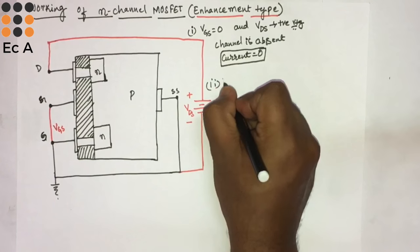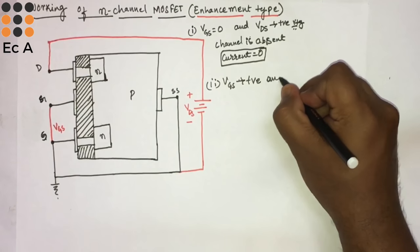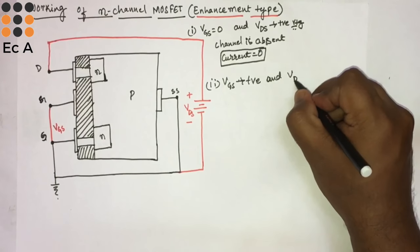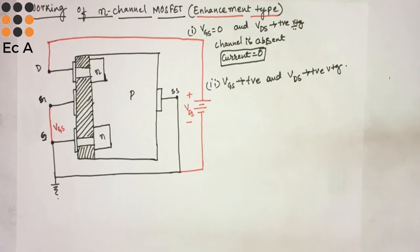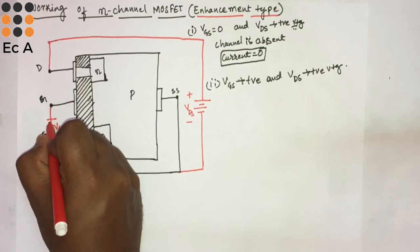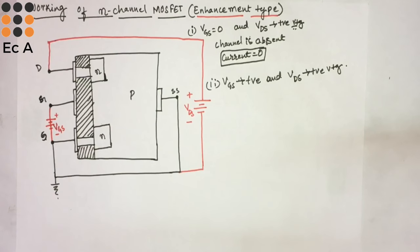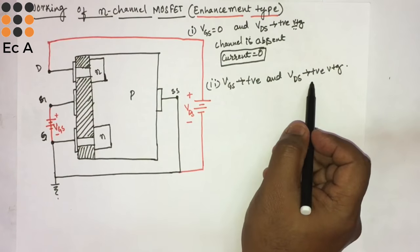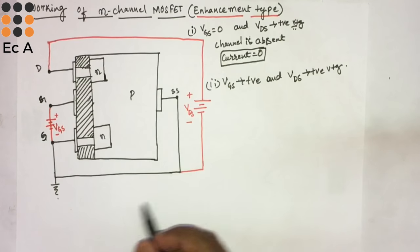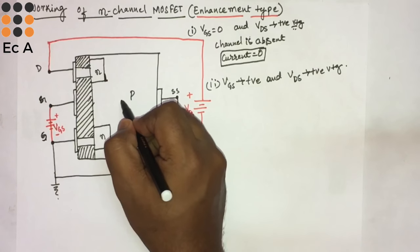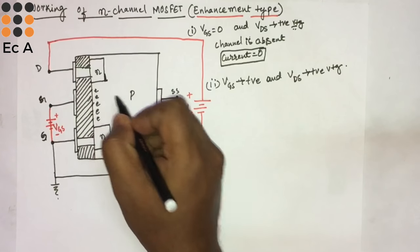For the second case, we will make VGS as some positive voltage and VDS again as a positive voltage. We make the gate terminal positive and the drain terminal positive as well. Due to the positive gate voltage, some of the electrons present in the P-substrate will start to accumulate towards the gate.